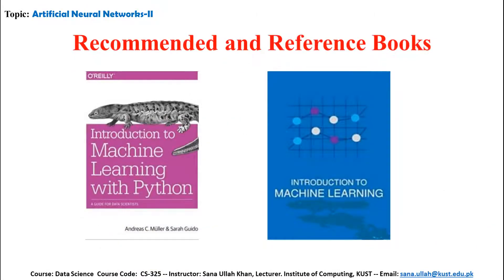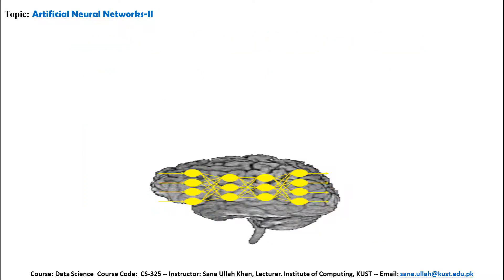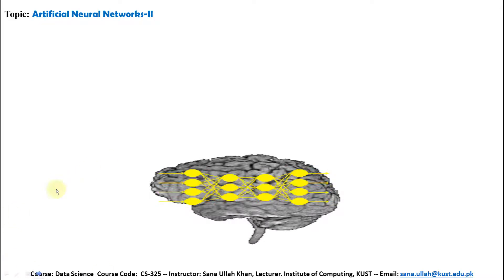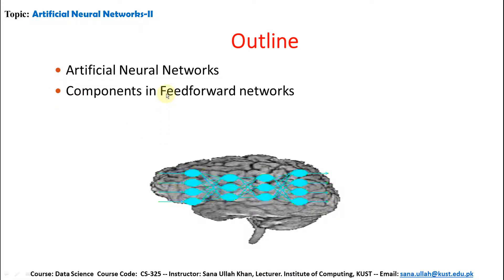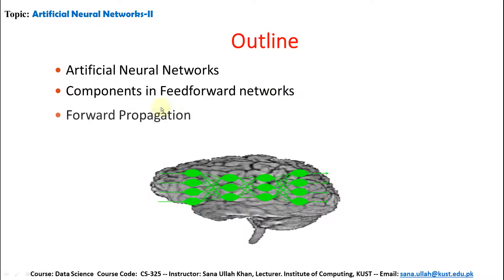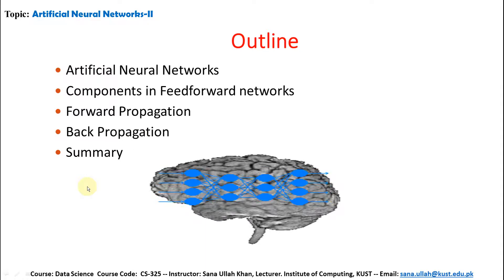This is the recommended reference books for this topic. The scenario of Artificial Neural Networks is that some input sets are given, then some hidden layer processes these inputs and provides the outputs. The outline of today's topic includes: components and feedforward networks, forward propagation, back propagation, and then a summary.